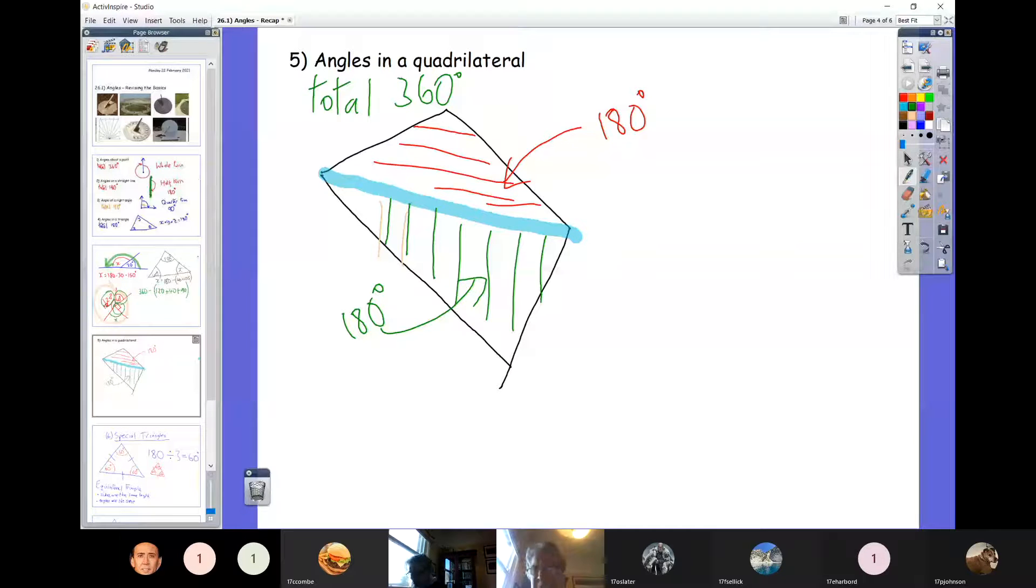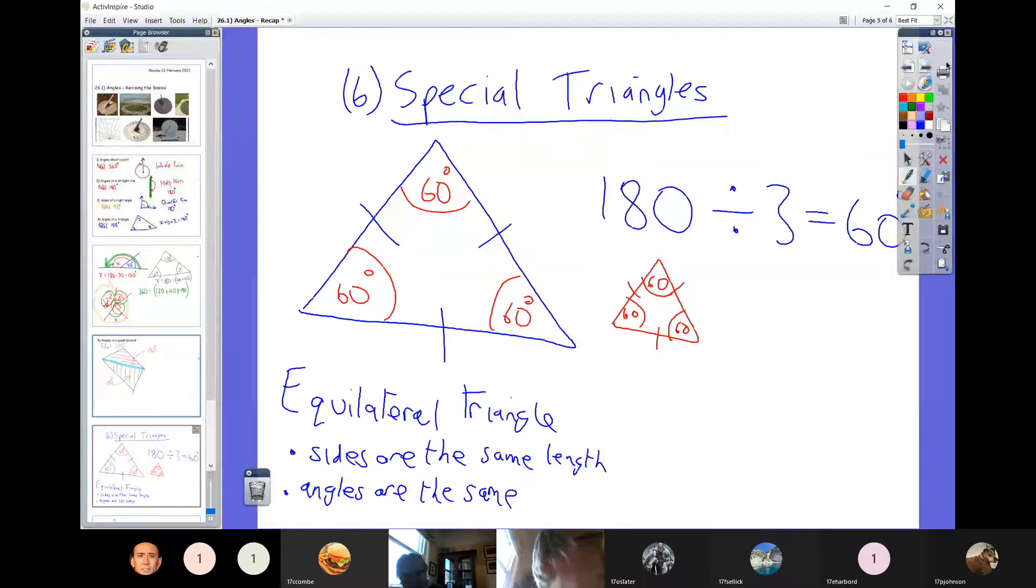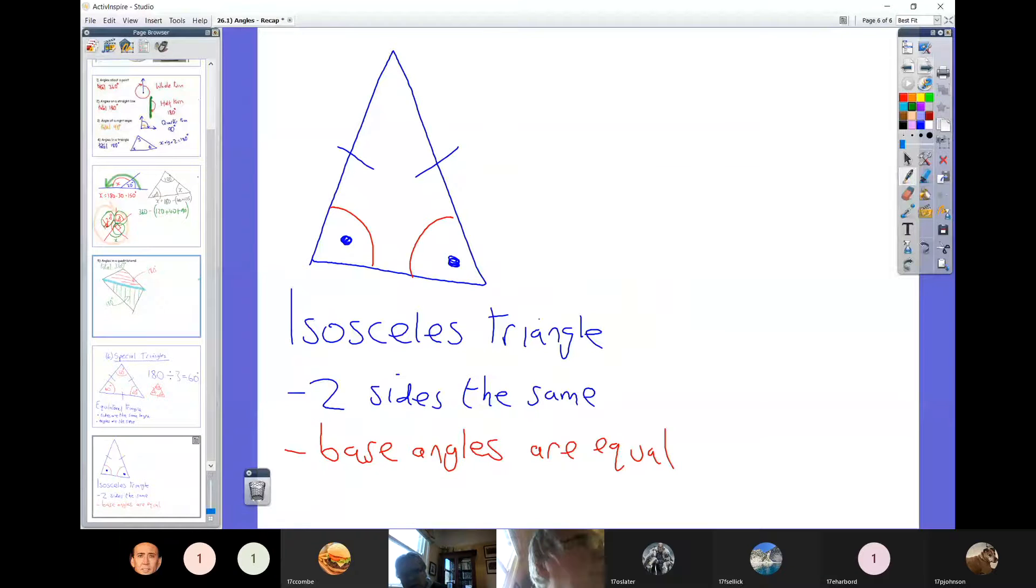Other things to look at. I just wanted to remind you of the special triangles. So you could have an equilateral triangle. That's when all three sides of the same length and all three angles of the same size. So it's 180 degrees divided by three. So every single angle in an equilateral triangle is 60 degrees. So that's the first of the special triangles. The other one is the isosceles triangle. This is where two sides of the same length and the two angles at the bottom are the same size angle. So be on the lookout for an isosceles triangle.